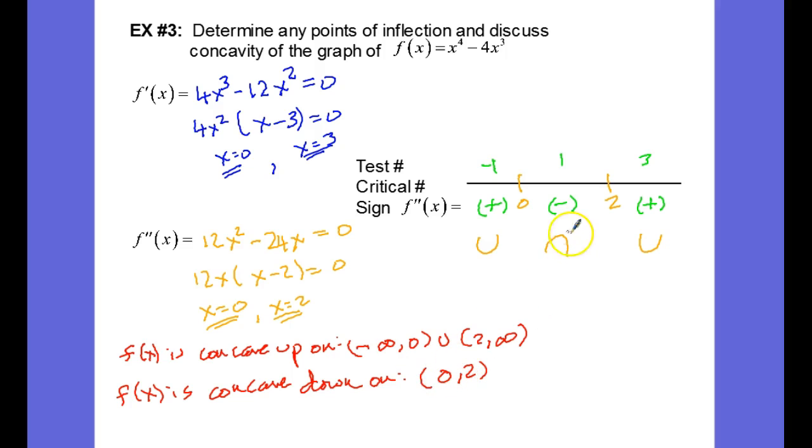Notice that the concavity changes from up to down across 0. That means that 0 is a point of inflection. Notice it changes from concave down to concave up across 2, so 2 is also a point of inflection.